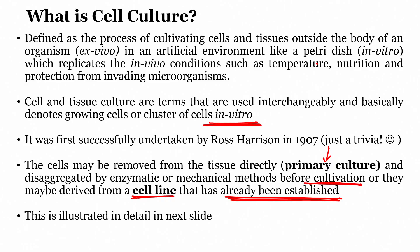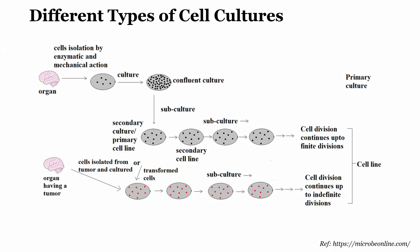There are three methods. First, I can use a mechanical way of disaggregating those cells. Second, if I use an enzymatic reaction, I can disaggregate those cells. Third, I can derive further cells from the existing cell line. All three ways are illustrated in the next slide. You have an organ from which cells can be isolated and disaggregated by enzymatic and mechanical actions.